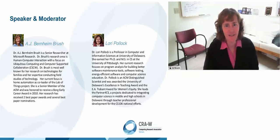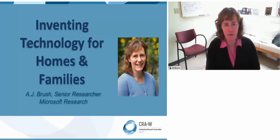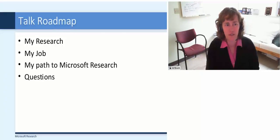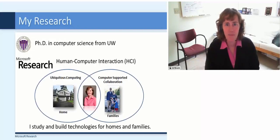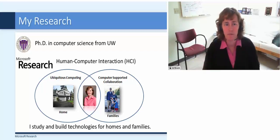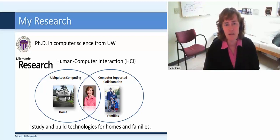Thanks, Lori. I'm really excited to be here today to talk to all of you about my research and my career path. I'm a senior researcher at Microsoft Research, and today I'll be telling you a little bit about my research, my job, how I got here, and then we'll do some mentoring questions. I have a PhD in computer science from the University of Washington. My field of research is human-computer interaction — I basically study and build technology for homes and families, crossing two disciplines: ubiquitous computing and computer-supported collaboration.